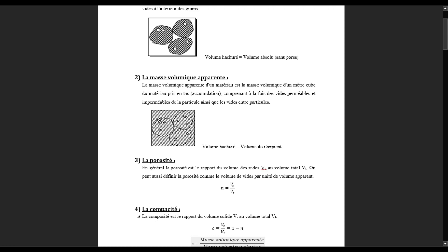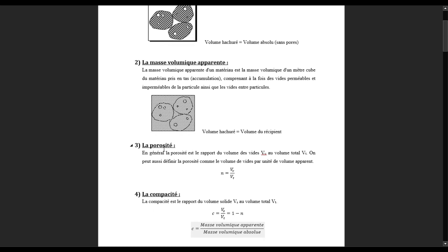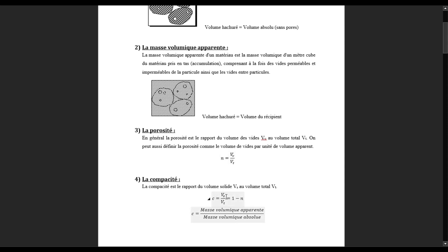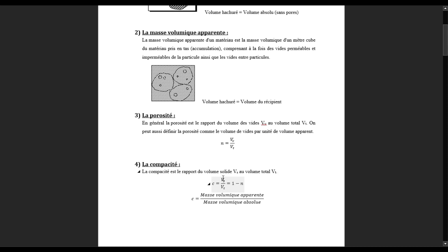La différence entre la porosité et la compacité est que la compacité, c'est le contraire. C'est le rapport du volume des solides divisé par le volume total. Quand on parle de porosité, il s'agit des vides. Quand on parle de la compacité, il s'agit de la matière compacte après déduction du vide. La porosité est égale au volume des vides divisé par le volume total, et la compacité est égale à 1 moins la porosité — il y a donc un rapport entre les deux.